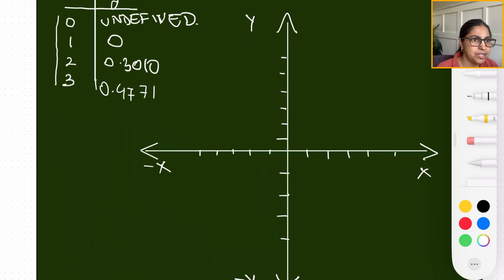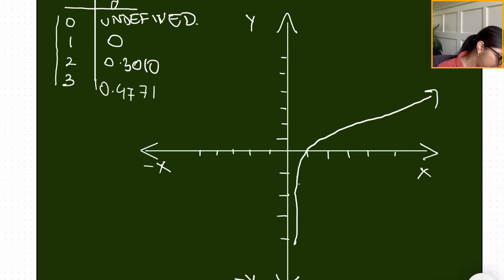When we plot these values, the shape that we end up getting, which I've also shown in a prior video, it starts off at the negative y-axis and it kind of loops. You can think of it looping, it crosses the x-axis at one, and then it kind of slowly exponentially goes up like that.